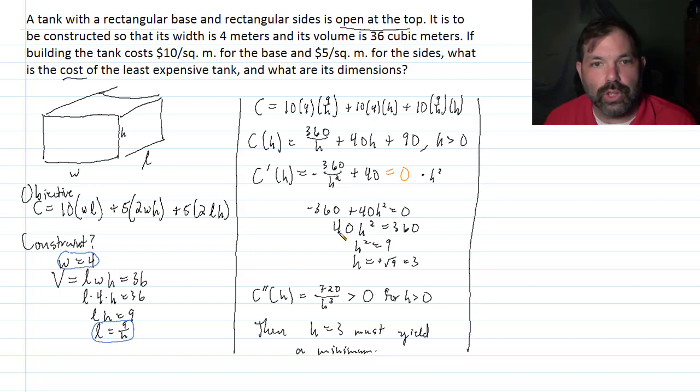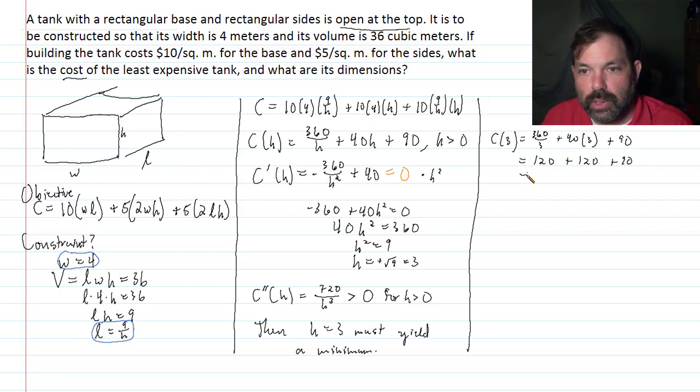So what are some conclusions? What is the cost of the least expensive tank? Well, the cost, so now find the cost if H equals 3. That would be 360 over 3, plus 40 times 3, plus 90. So that would be 120, plus 120, plus 90. That would be $330. So the least expensive tank would cost $330.